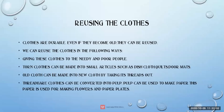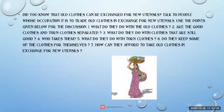Old torn clothes can be converted into pulp, and pulp can be used to make paper. That paper is used for making flowers and paper plates. Also, old clothes can be exchanged for new utensils — that woman comes and shouts outside: 'Give old clothes and take new utensils!' You must all know this. This is a trade where people exchange old clothes for new utensils.